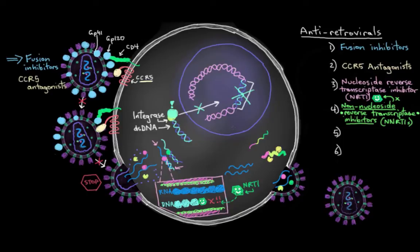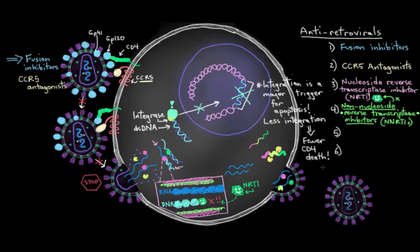And this step is really good. This is an extra important step here, because it's been shown that viral DNA integrating into our DNA is a major trigger for our cell to undergo apoptosis or self-destruction. So just as a general rule, the less viral DNA that actually does this integration step, the fewer CD4 cells that we end up losing. So now let's add that to our list. Integrase inhibitors.